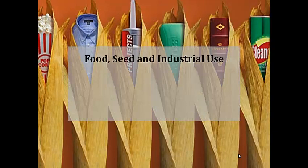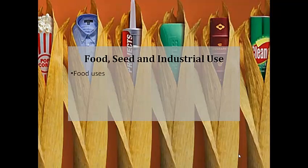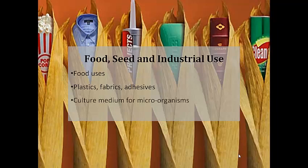Food, seed and industrial use. Corn can be cross-pollinated to achieve desirable characteristics that can be processed and extracted by industrial means. Apart from food uses mentioned just now, corn can be made into plastics, fabrics, adhesives and many other chemical products. Its by-product from the wet milling process is also widely used in the biochemical and research industry as a culture medium to grow many kinds of microorganisms. Of all its industrial uses, the most valuable use is still as an alternative fuel.